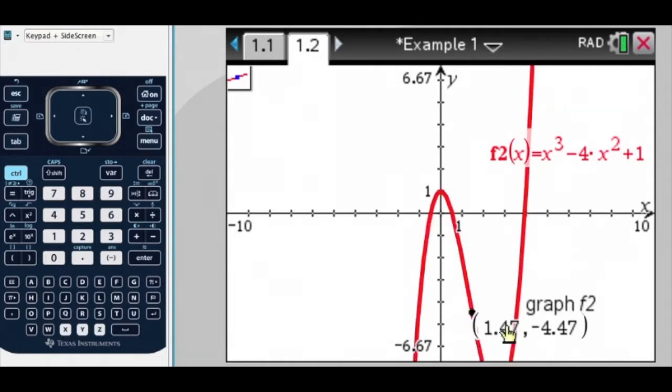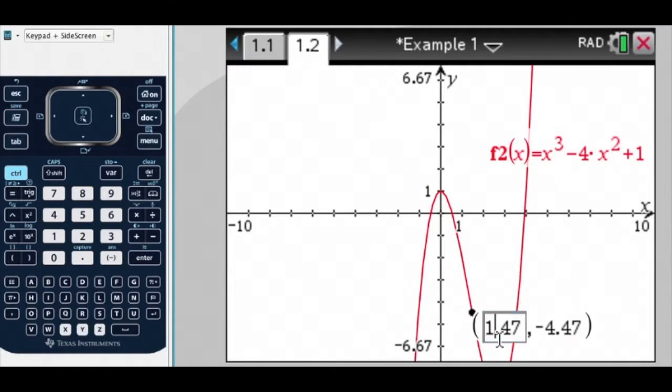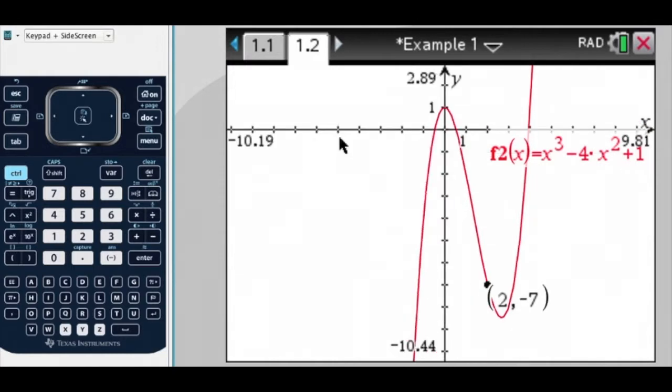That's not the point I want, so I'm going to double click in there, in the x coordinate. Okay, so I've just double clicked in there, and I'm going to put 2, and if I press Enter, what it should do is go to (2, -7).